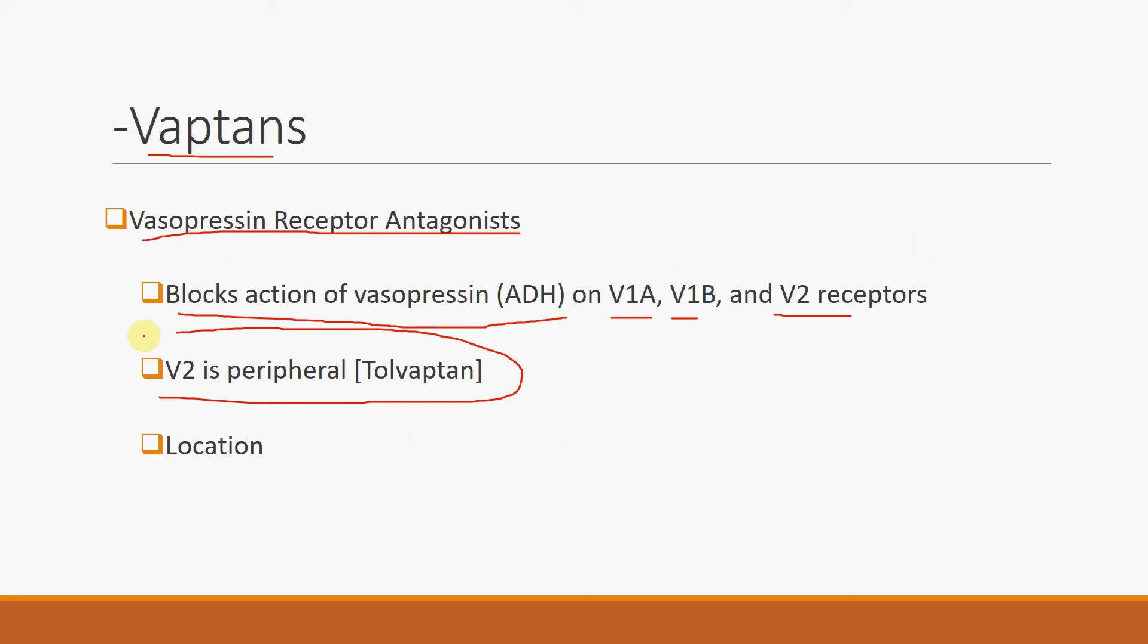For today's discussion, we'll focus primarily on the V2 receptor, and the primary drug that blocks that is Tolvaptan, or it's one of them that is seen most commonly in the clinical setting.